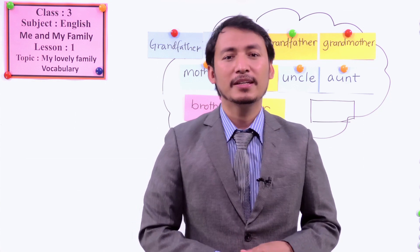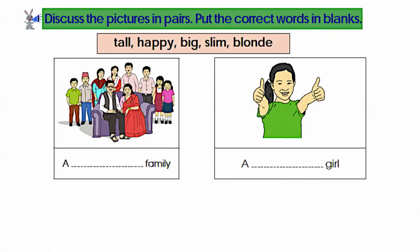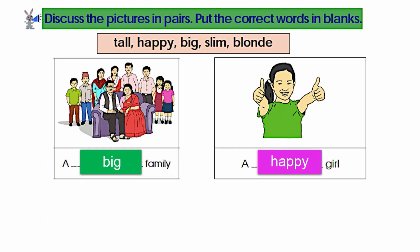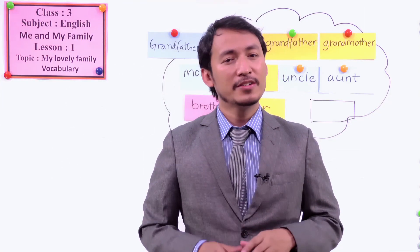Another picture we have in our book is about this family. What do you think? How do you describe the size of the family? Is it a small family or a big family? Yes, it's a big family. So we put here — big family. Another picture — a girl is here, she is doing something. How does she look? Can you describe her appearance? How does she look and how does she feel? Is she sad? No — she is happy. A happy girl, you can say. This is how we describe different people.